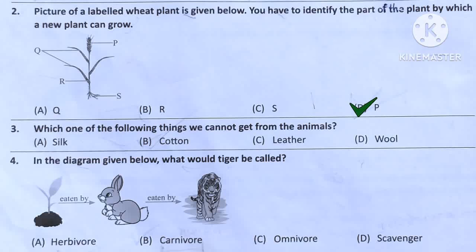Question number 3. Which one of the following things we cannot get from animals? Option A: Silk — we get silk from silkworm. Option B: Cotton — we get cotton from cotton plant. Option C: Leather — we get leather from animal skin. Option D: Wool — we get wool from sheep. So the answer is Option B.